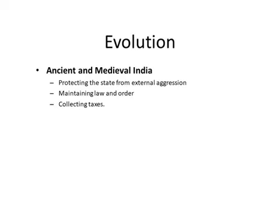By 1700, the GDP of Mughal India was the largest in the world, and it was a leader in manufacturing up until the 18th century. Also, the real wages and living standards in 18th century Mughal Bengal and South India were higher than in Britain, which in turn had the highest living standards. With the arrival of the British in India, there was the advent of modern administrative law.